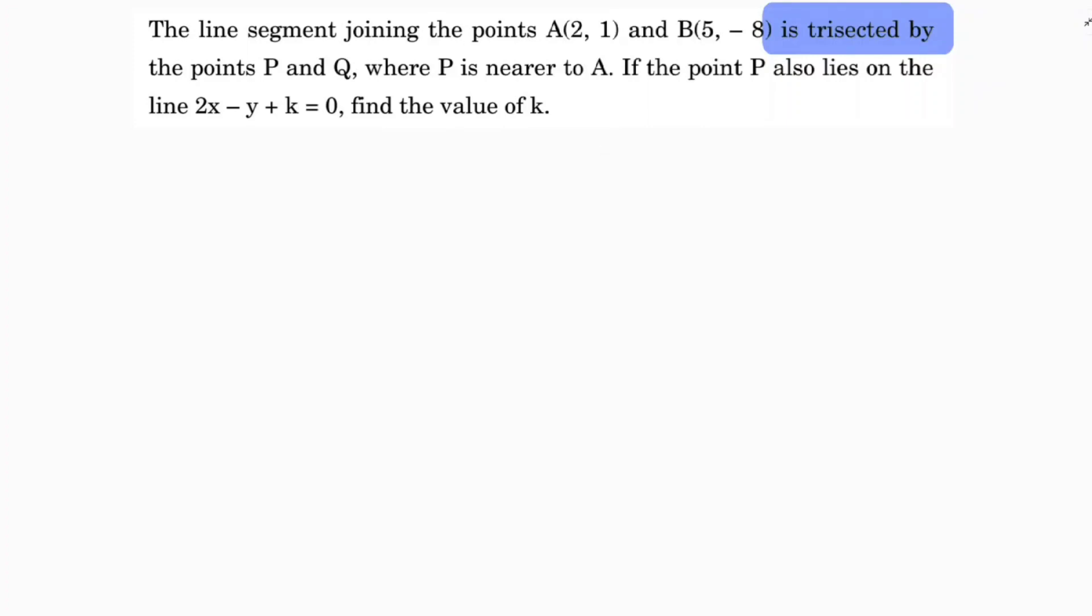A is (2, 1), B is (5, -8). It got trisected at points P and Q, and if the point P is near to A, so P is here, Q is here. Trisected means AP, PQ, and QB are all equal.